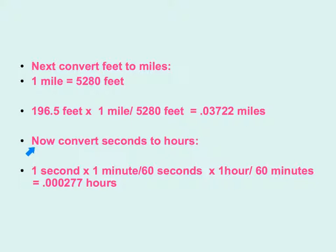Now we must convert seconds to hours. To convert seconds to hours, we know that one minute has 60 seconds, one hour has 60 minutes. So we take one second times one over 60 times one over 60. Our seconds cancel, our minutes cancel, we are in hours. So 0.000277 hours was the time that went by.